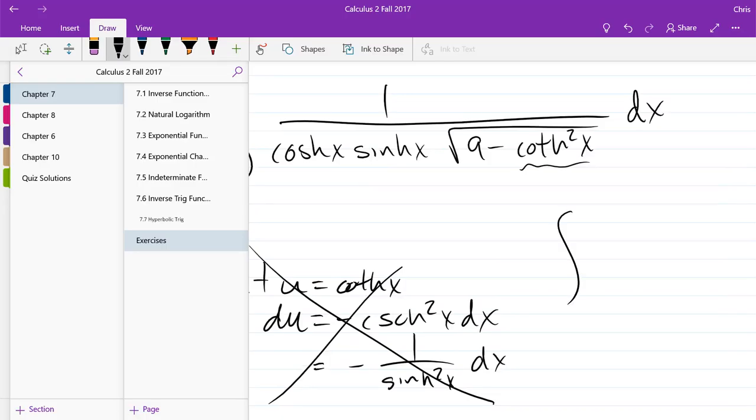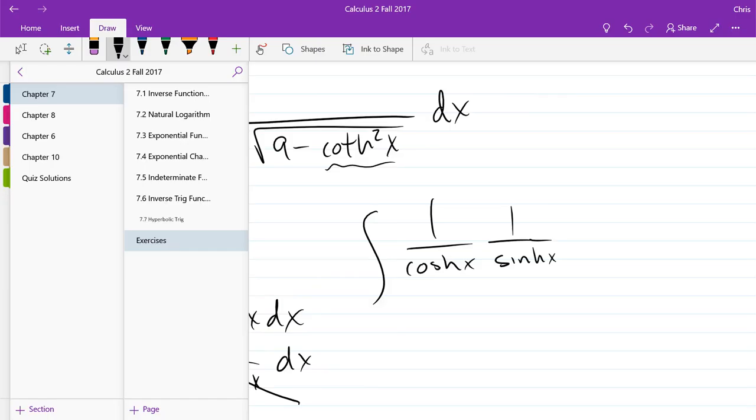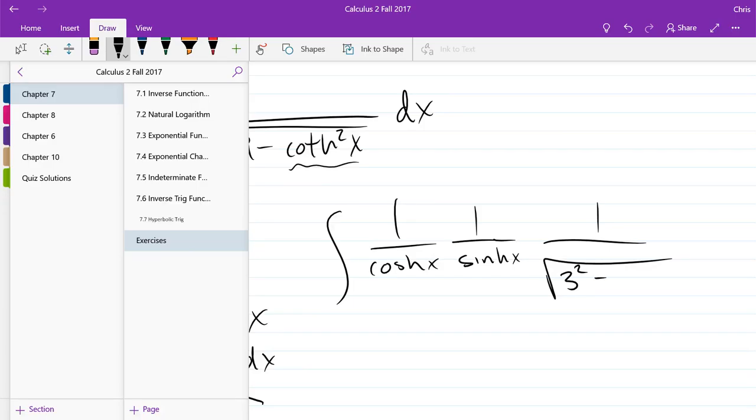Can we split it up like 1 over cosine, 1 over sinh? Yeah, we could rewrite it in some different ways. So I'd go 1 over cosine, 1 over sinh, 1 over square root. This is 9. I'm going to write as 3 squared minus cosine over sinh. The whole thing's squared.